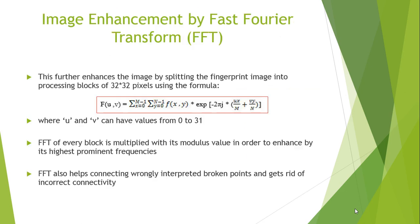Next, the image is further enhanced by applying the concept of fast Fourier transform. Using the formula shown, the fingerprint image is split into blocks of size 32x32 pixels, where u and v can have values from 0 to 31. Then the FFT of every block is multiplied with its modulus value in order to enhance by its highest prominent frequencies. FFT also helps in connecting wrongly interpreted broken points and gets rid of incorrect connectivity.